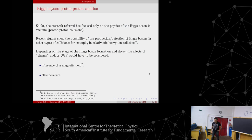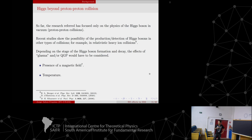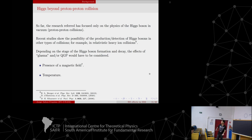This investigation has been for proton-proton collisions — what I call the vacuum. But recent studies show the possibility of producing and detecting the Higgs in other types of collisions, for example relativistic heavy-ion collisions. Because at the initial stages of this type of collision there are a lot of gluons, and since gluon fusion is the principal channel of Higgs production, this is an ideal situation. Depending on the stage of Higgs boson formation and decay, the effects of the environment — like the presence of a magnetic field or temperature — could affect its properties.